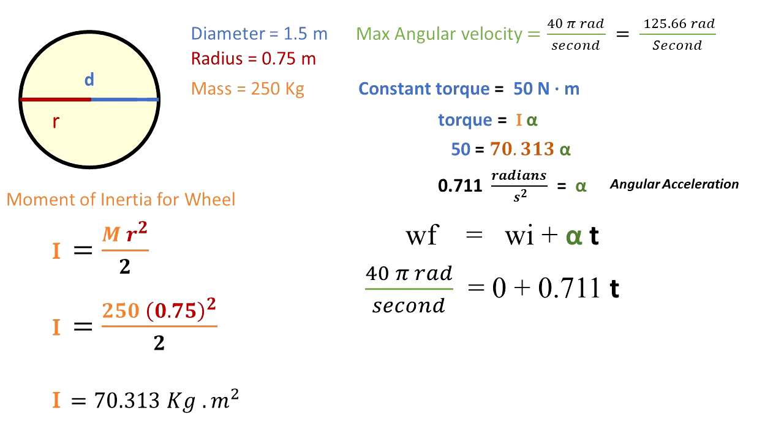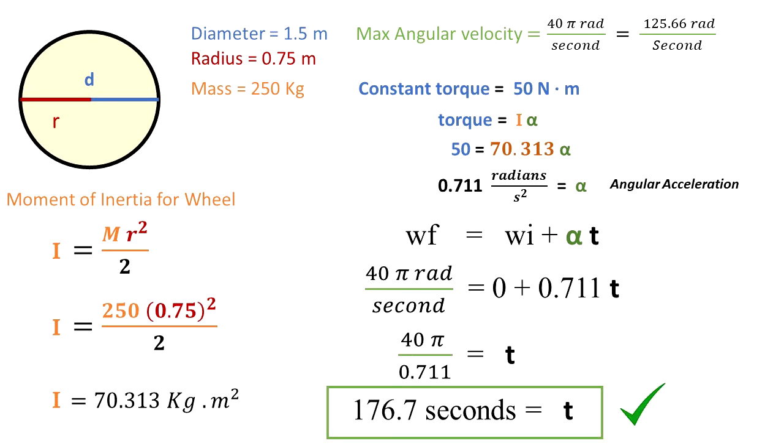So 40π radians per second equals 0.711 times t. We divide and we get that 176.7 seconds equals t.